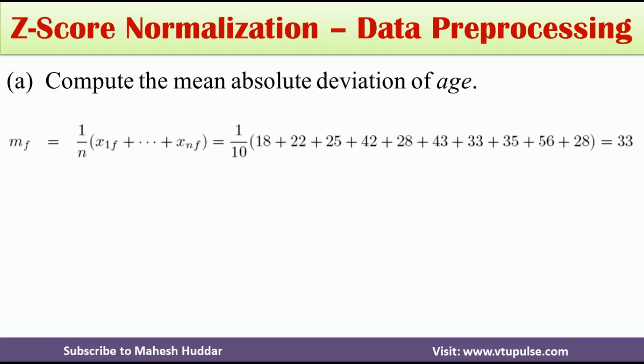To calculate the mean we use the formula: mean = (x1f + x2f + ... + xnf) / n, where n is the number of values. In this case it is (18 + 22 + 25 + ... + 28) / 10, which equals 33. So the mean of the age column is 33.